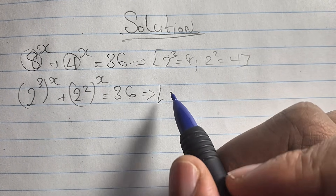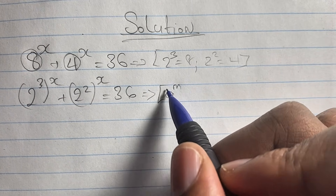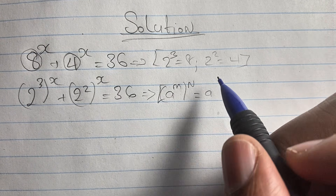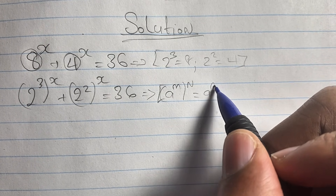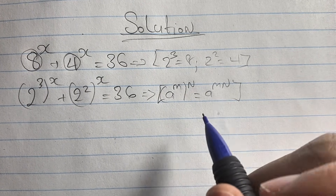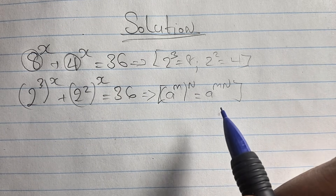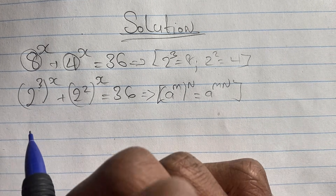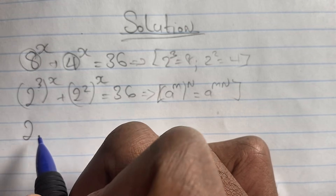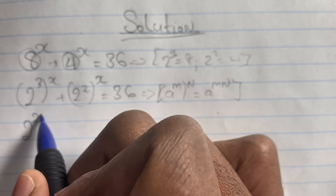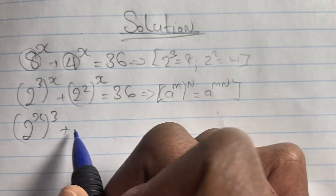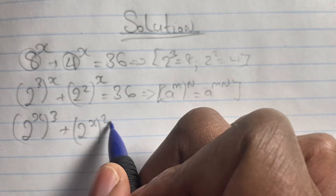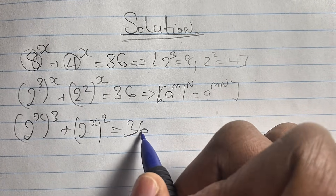From here we apply the algebraic rule where a to the power of m, raised to the power of n, is the same as a to the power of m times n. And since multiplication is commutative, the order of m and n doesn't matter. So we can write 2 to the power of x, raised to the power of 3, plus 2 to the power of x, raised to the power of 2, is equal to 36.